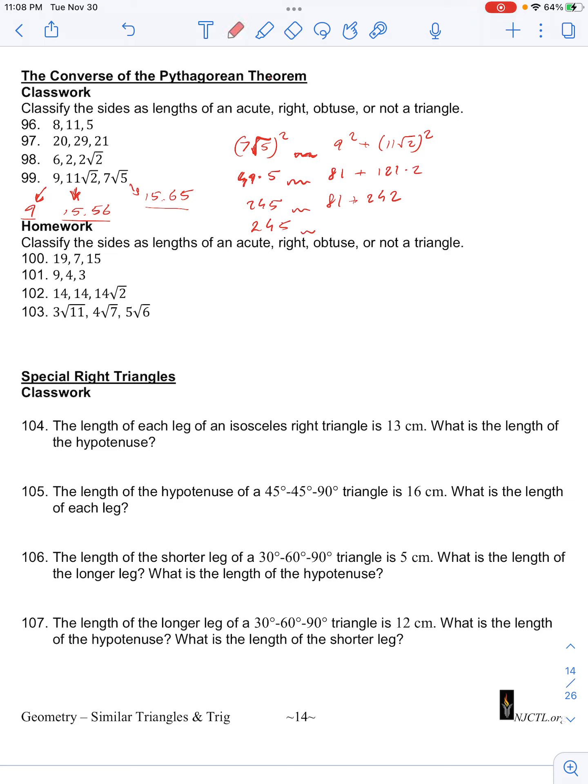Or adding these together, we'll have 323. So 323 is greater than 245, which means that the square of the two shorter sides is greater than the square of the hypotenuse.